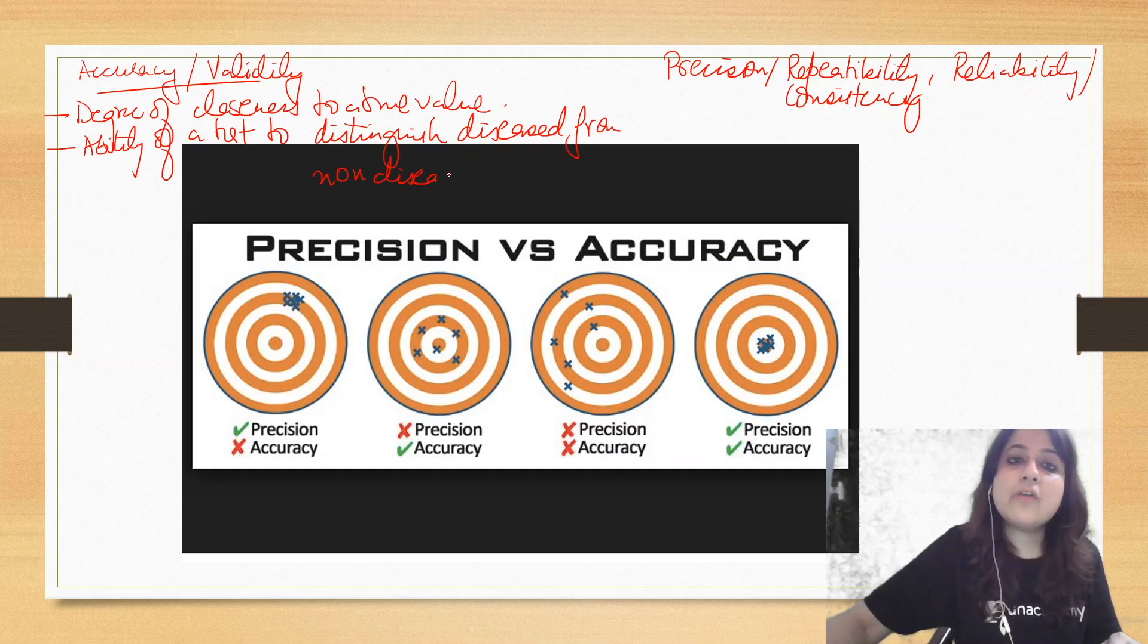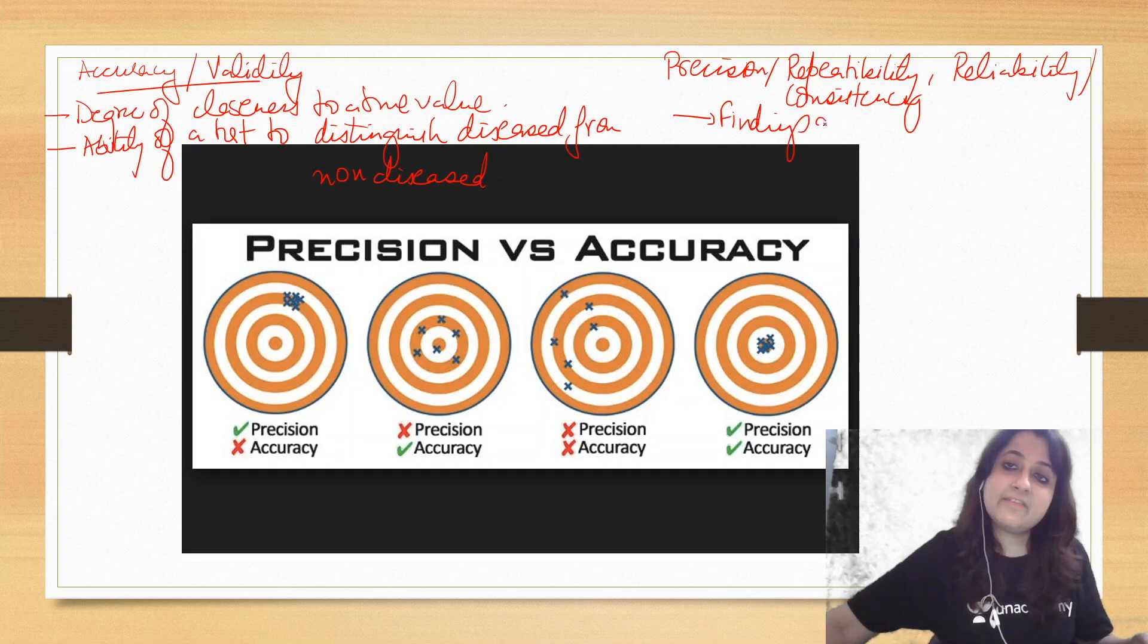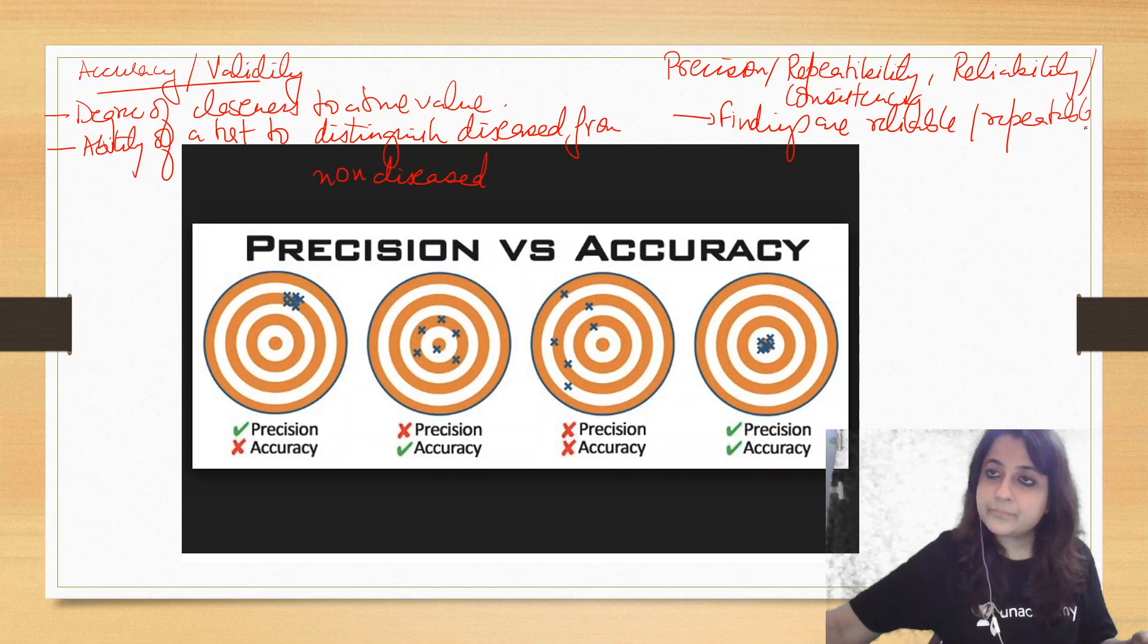How close can we get to the true value? Precision or reliability simply means that the findings are reliable, repeatable in different settings. That is what is the meaning of precision.